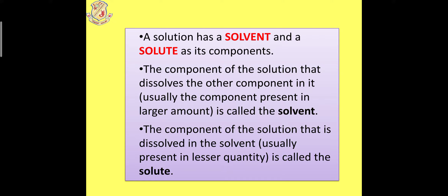A solution is made up of two components: one is a solvent and another is a solute. The component of the solution that dissolves the other component in it, usually present in large quantity, is known as solvent. Normally, solvent is always in liquid form, and we know water is a universal solvent. A component of the solution that is dissolved in the solvent, usually present in less quantity, is called a solute.